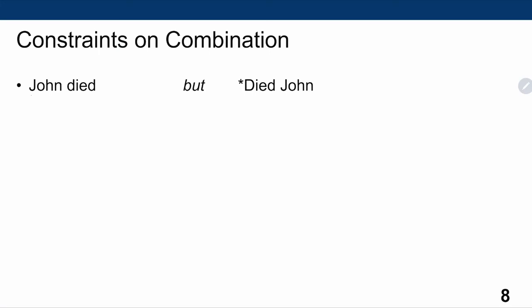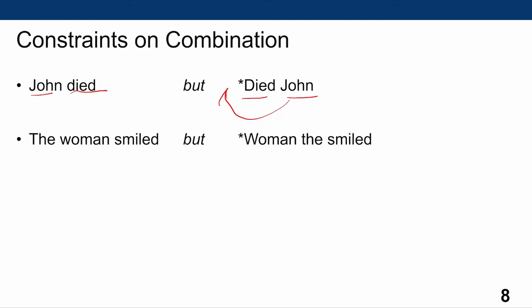Let's look at some constraints on how words can be combined to form sentences, since I can't just scramble words together in whatever way and get a grammatical sentence. The first example is the noun 'John' followed by an intransitive verb 'died.' The ungrammaticality of 'died John' shows that an intransitive verb must be preceded — not followed — by the noun. Similarly, 'the woman smiled' is correct, but 'woman the smiled' is ungrammatical because the determiner was placed after the noun. This shows that the determiner in English must precede, not follow, the noun.